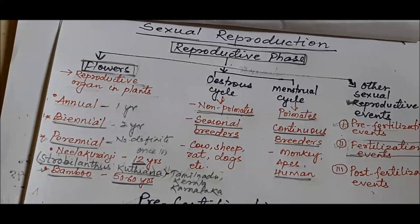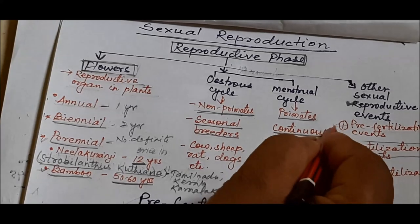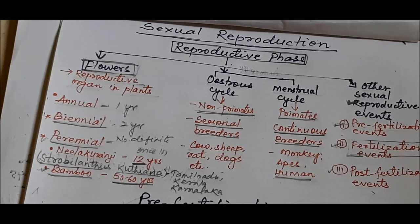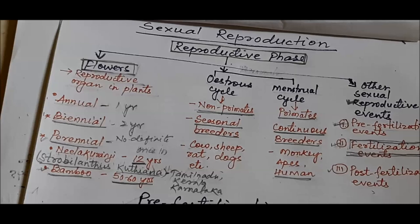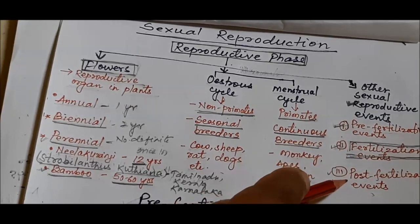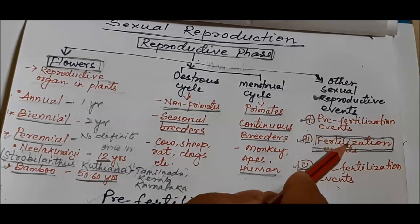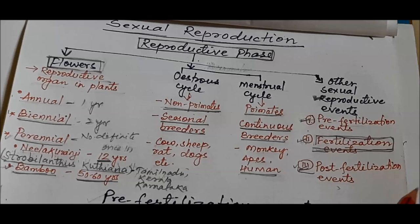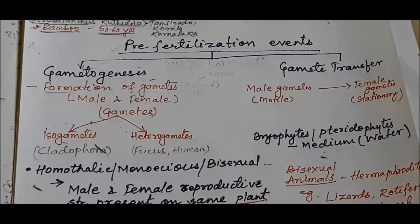Other sexual reproductive events also occur during the reproductive phase of organisms, whether plants or animals. There are three sexual reproductive events: pre-fertilization events, fertilization events, and post-fertilization events. The main event of sexual reproduction is fertilization. Events before fertilization are called pre-fertilization events, and events after fertilization are called post-fertilization events.